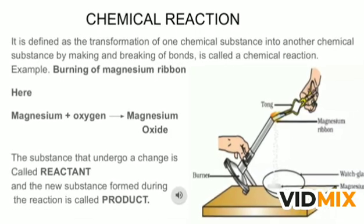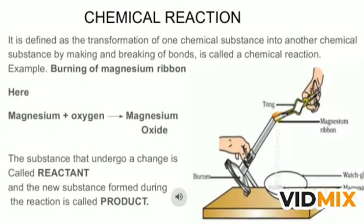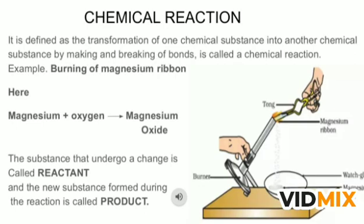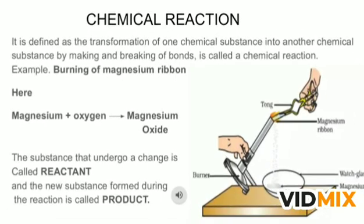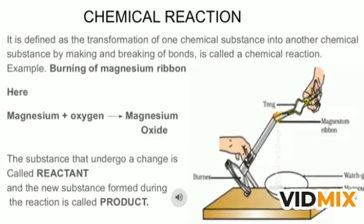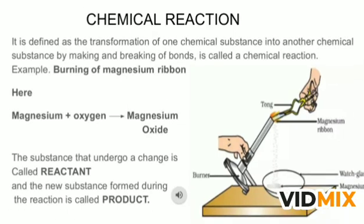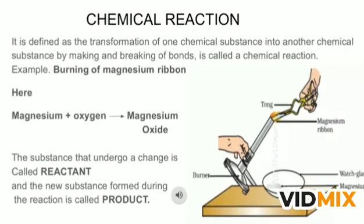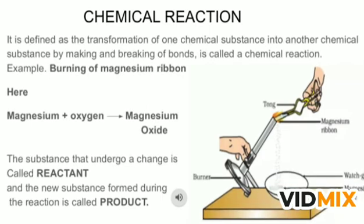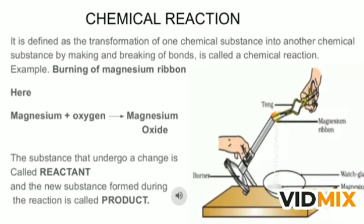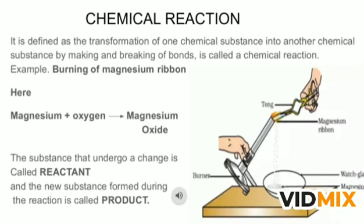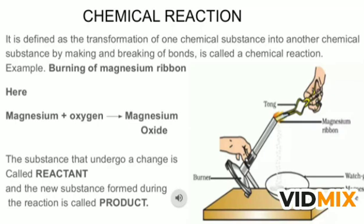Hope you are clear about the term 'change' and its classification into physical and chemical change. Now, coming to the term 'chemical reaction' — what do you understand by chemical reaction? As per definition, it is defined as the transformation of one chemical substance into another chemical substance by making and breaking of bonds. One substance is changing into another particular substance, and during this change bonds break and are made — so this is a chemical change and it is termed as a chemical reaction.